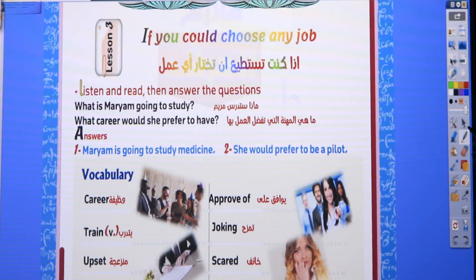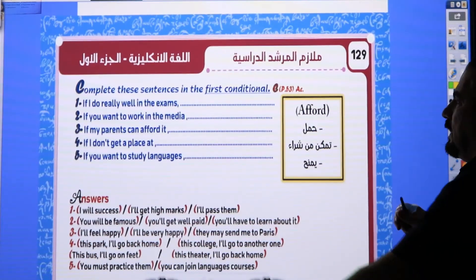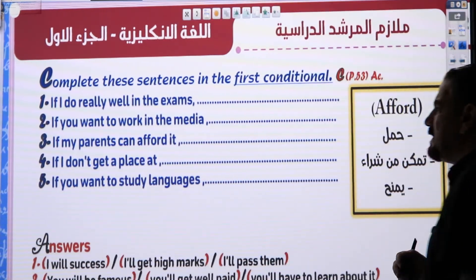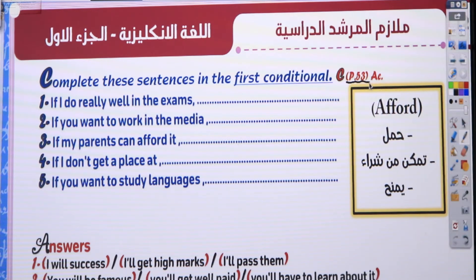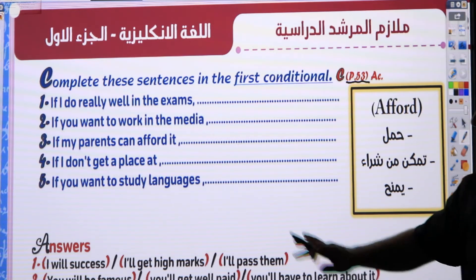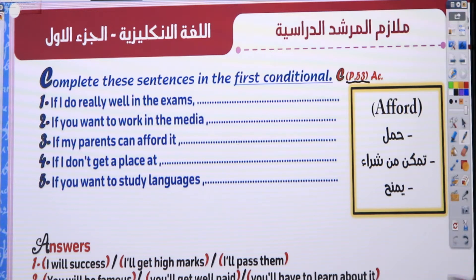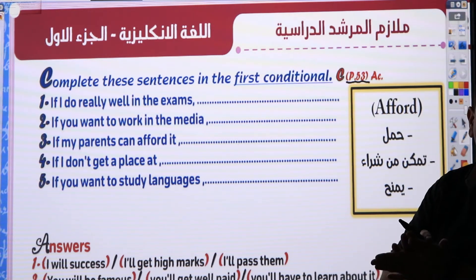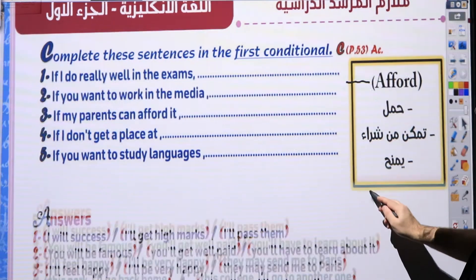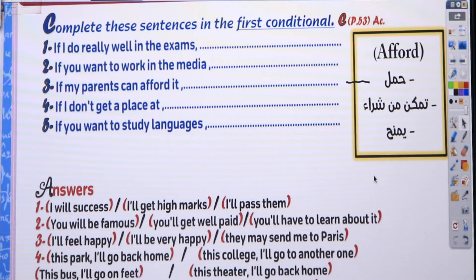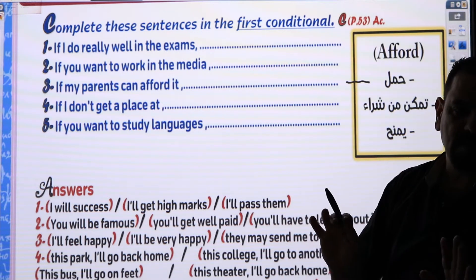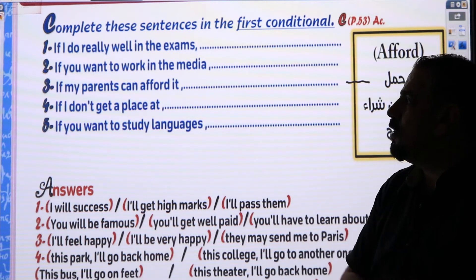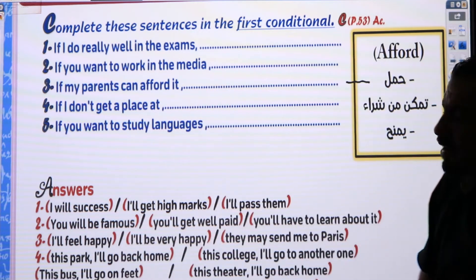Now let's look at the next exercise — complete from your own words. This exercise is on page 53, activity book, Exercise G — 'Complete these sentences in the first conditional.' Someone might ask whether this open-completion style appears in ministry exams. Based on previous years it's unlikely, but if it does appear they give you half the sentence. Strong students can compose their own; weaker students should memorize the provided model answers.